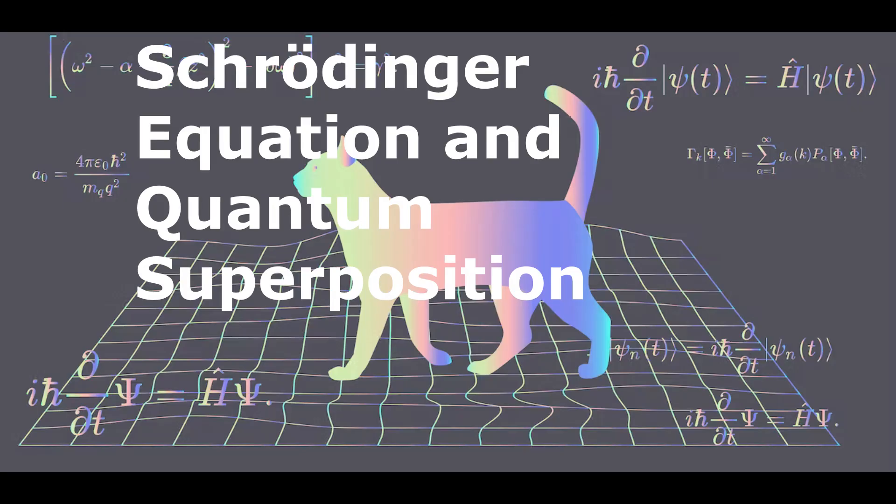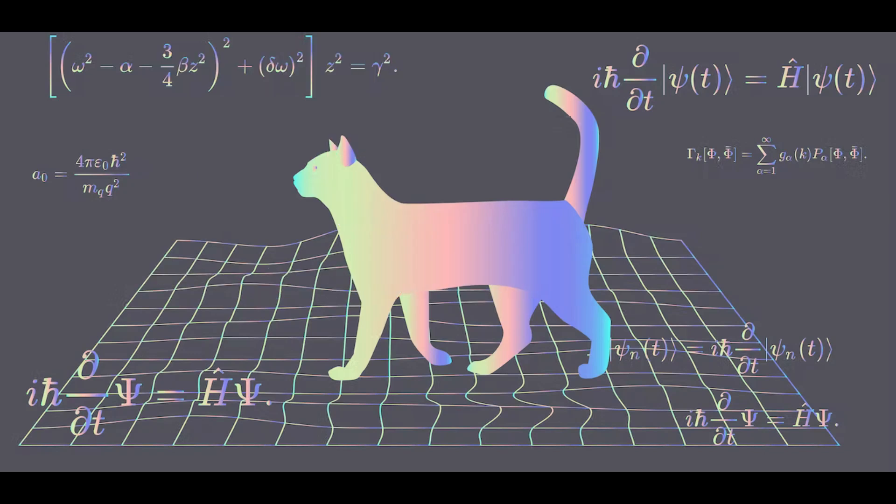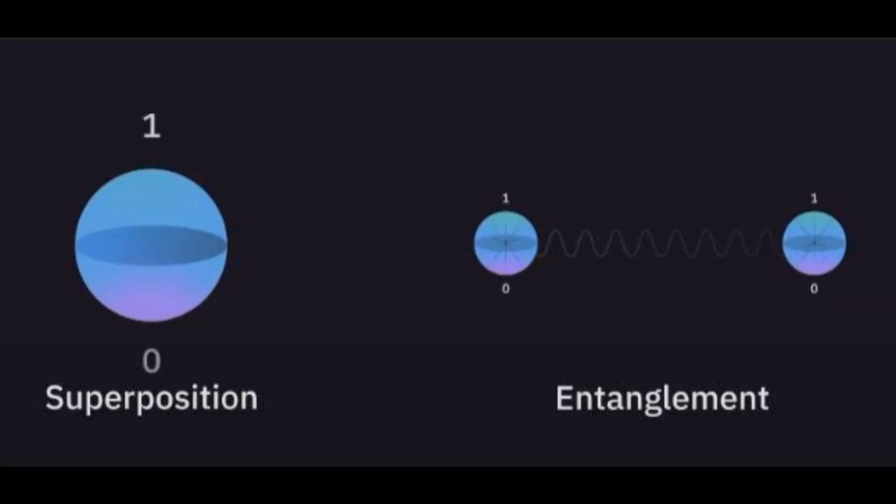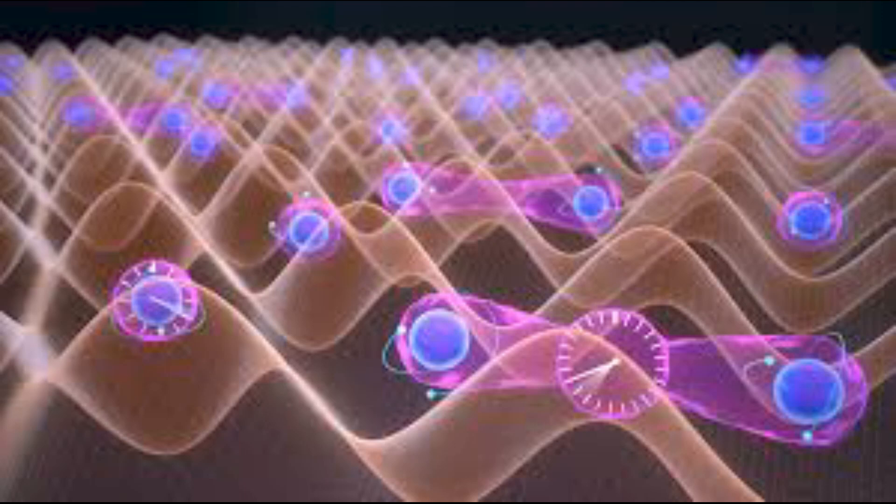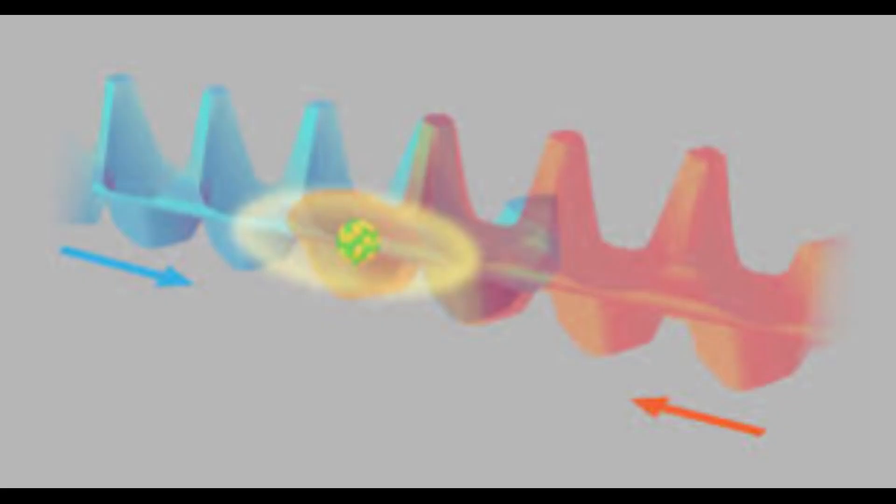The Schrodinger equation is the cornerstone of quantum mechanics, which describes how the quantum state of a physical system evolves. This equation supports the probabilistic nature of quantum mechanics and determines the probability of finding a particle in a particular state. Quantum superposition is a fundamental concept that arises from solutions of the Schrodinger wave equation.